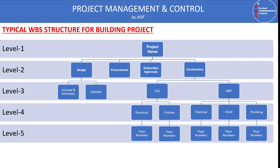Under authority approvals we have municipality approval and NOCs from utility providers. Construction depends on whether there are different buildings — each building can be further divided into civil and MEP. Civil can be divided into structure and finishing work, and MEP into electrical, HVAC, plumbing and drainage. Structure, finishing, and MEP trades can be further divided into floor numbers, and those into activity types such as columns, wall slabs, wet trades, painting, wall/floor/ceiling/external finishing, and MEP first, second, and final fix phases.